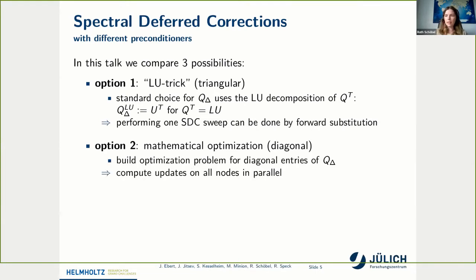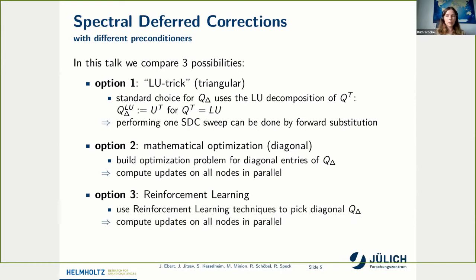For the other two possibilities I want to present, we set up a diagonal preconditioner, choosing a diagonal Q_triangle. If we do so, we can compute an SDC sweep over the nodes in parallel. Option two uses techniques from mathematical optimization, which I will discuss in more detail on the next slide. The other option is to pick this preconditioner with the help of reinforcement learning techniques, which I will also explain in more detail later.